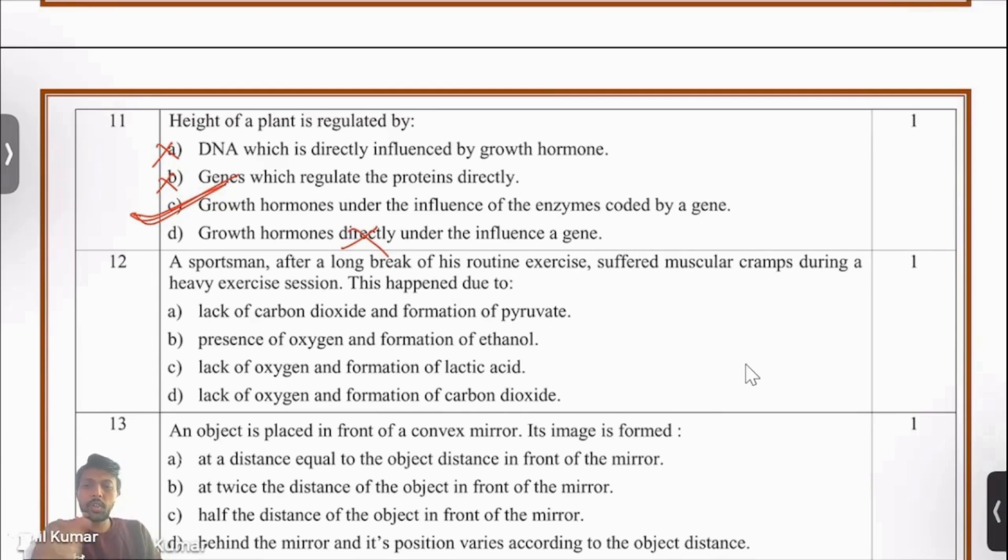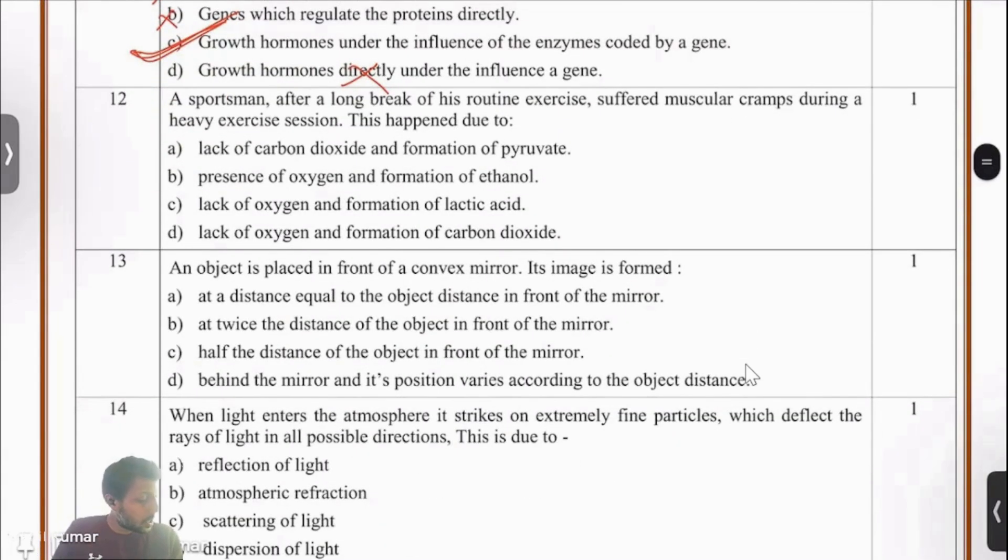A couple more pointers. We know that genes play a fundamental role in plant height regulation. They not just code the enzymes, they code the proteins also involved in the growth process. DNA is the blueprint of genes, and genes determine what is the maximum potential height a plant can reach. With these insights, let's move on to the next question.